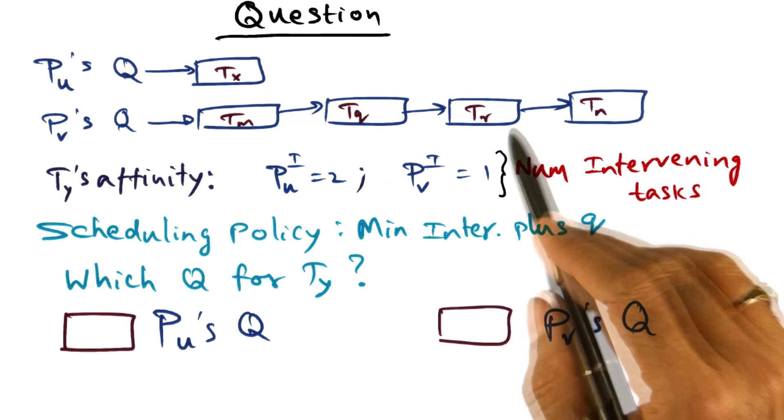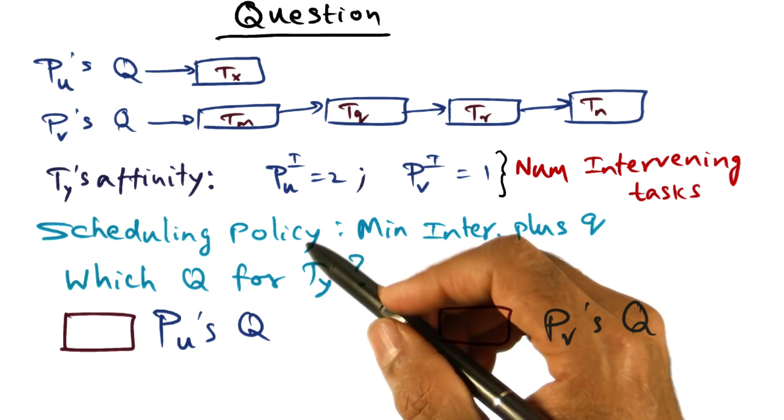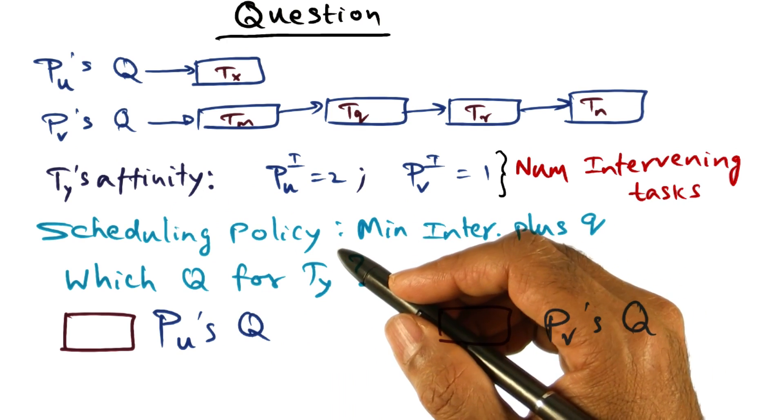T_m, T_q, T_r, and T_n. So these are the threads on P_v's Q. And there's a particular thread, T_y.